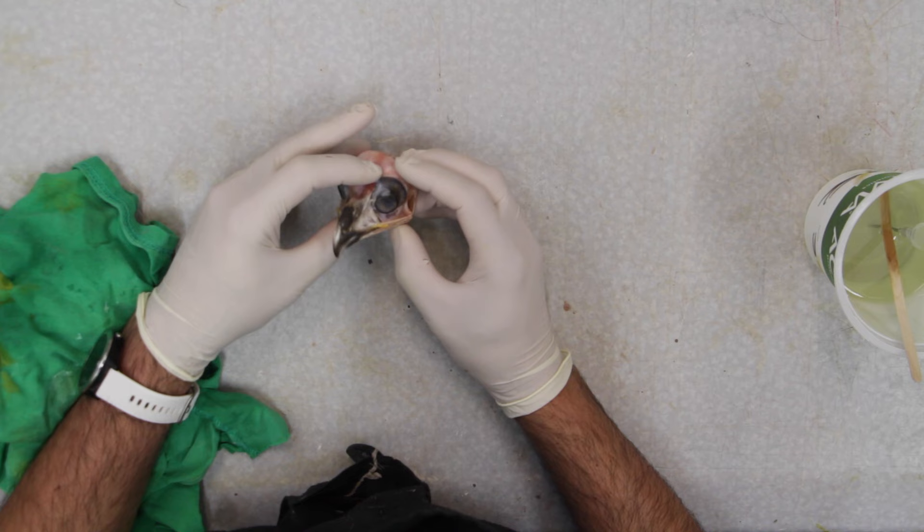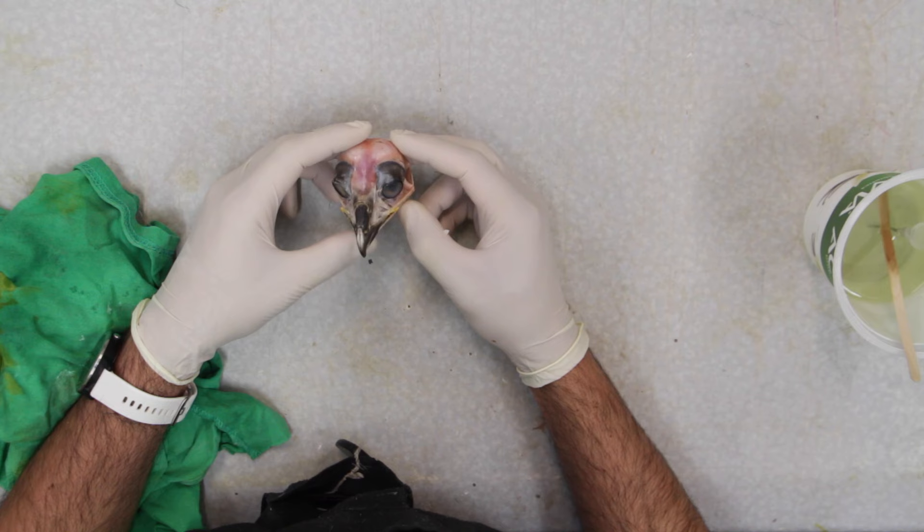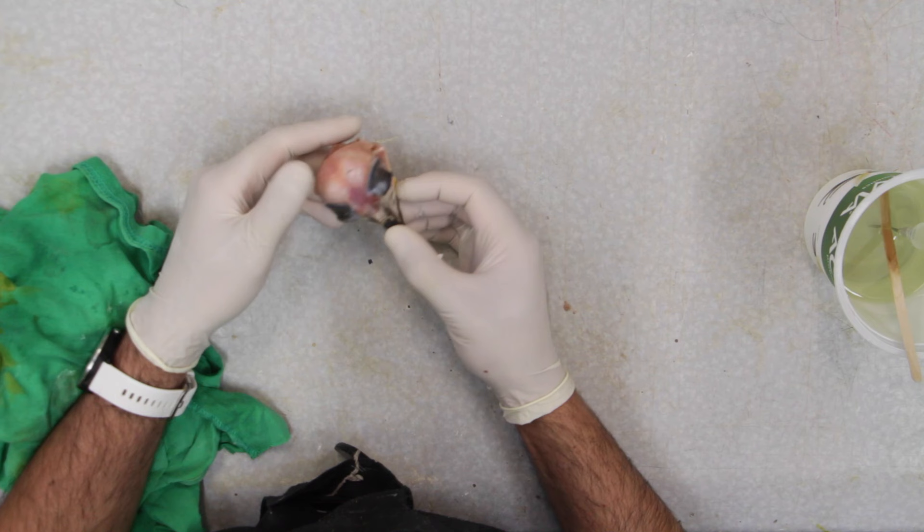All right, so we got this young owl, it's a great horned owl, just a baby that fell out of the nest I believe and died. Just because I'm not going to have too many of these, this is the first time I'm receiving an owl in this size, so that means making a mold out of it and reproducing it out of resin.